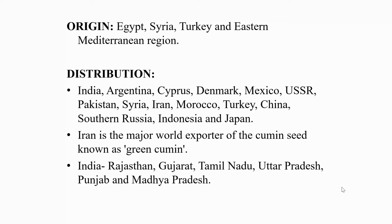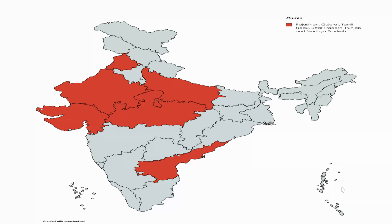Iran is the major world exporter of cumin seed, known as green cumin. In India it is cultivated on a commercial scale in Rajasthan, Gujarat, Tamil Nadu, and to some extent in Uttar Pradesh, Punjab and Madhya Pradesh. Gujarat is the leading cumin seed producing state in India.